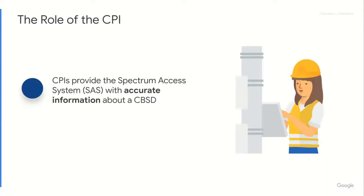Without the right information, the SaaS can't protect higher priority users like, for example, the U.S. Navy. We need to protect them, we need to make sure the information in the SaaS is accurate, and we rely on CPIs to do that.